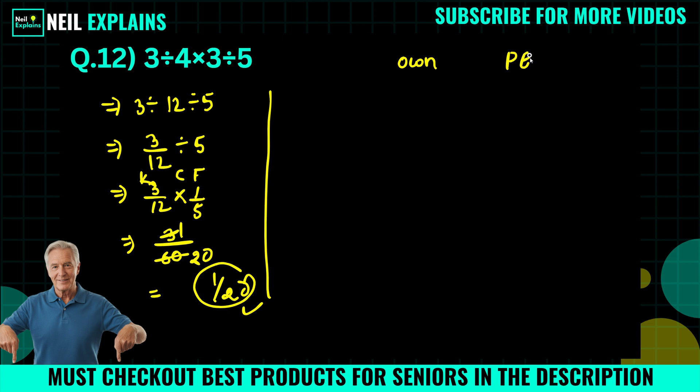We will use here PEMDAS and we will follow a stepwise method so everybody will understand what's going on. So we will rewrite our question again here: 3 divided by 4 times 3 divided by 5. There are three operations: division, multiplication, and division. And all operations have similar priority, and in that case we have to solve from left to right. So first we will operate this 3 divided by 4.